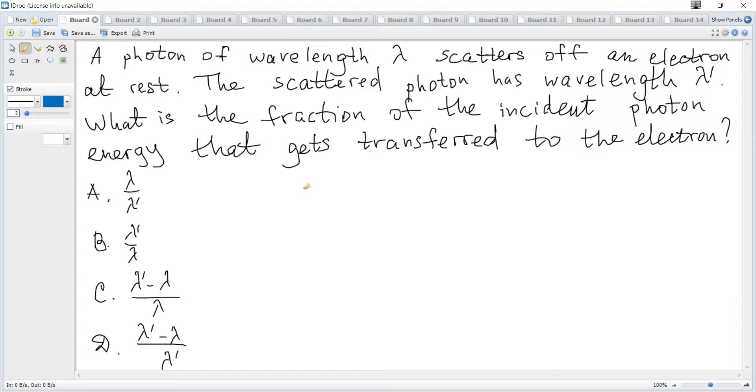A photon of wavelength lambda scatters off an electron at rest. The scattered photon has wavelength lambda prime. What is the fraction of the incident photon energy that gets transferred to the electron?